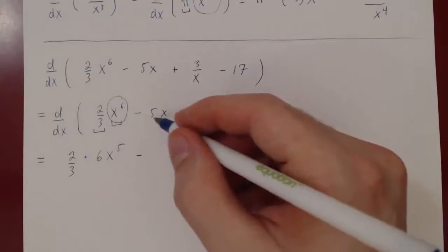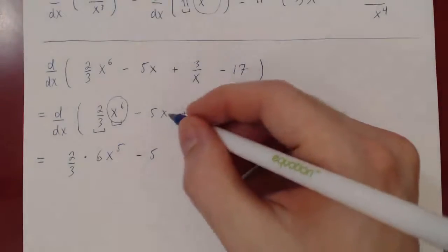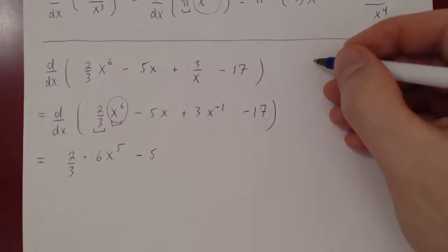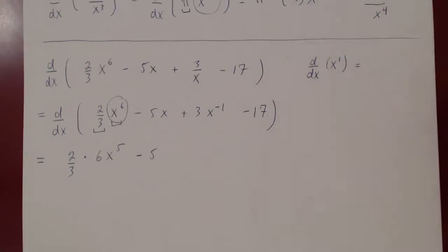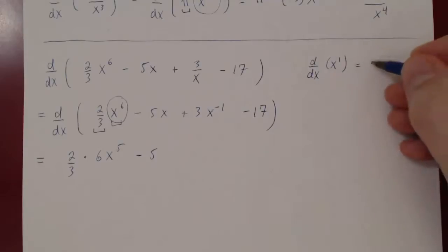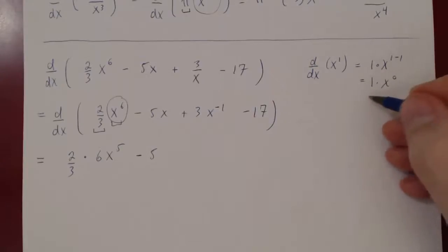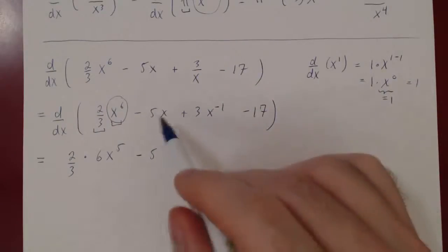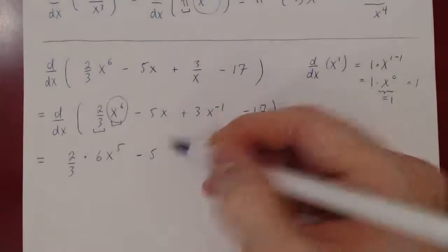For the second term, minus 5x: 5 is a constant multiple of x, so it stays as 5. The derivative of x is just 1. You can see this two ways: using the power rule, x is x to the 1, bring the power down to get 1 times x to the 0, and x to the 0 equals 1, so you get 1 times 1 which is 1. Or more simply, y equals x is a line with slope 1, so the derivative of x is 1.